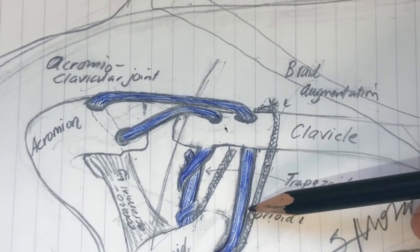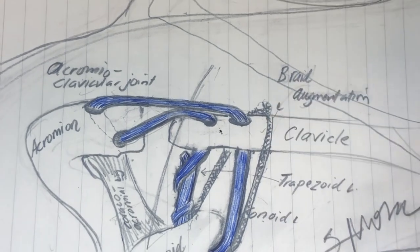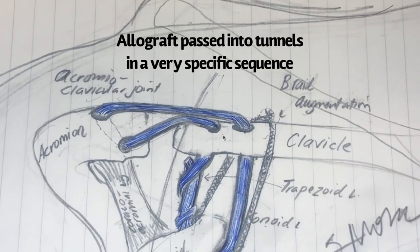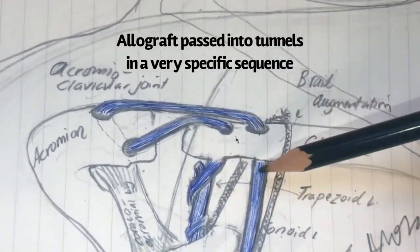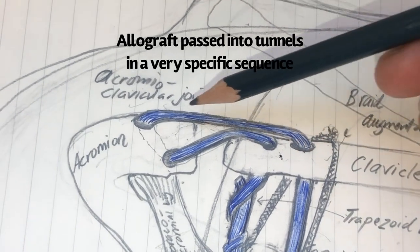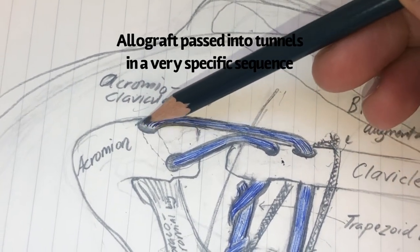Once I pass the tendon in the braid, I tie the braid down. The clavicle is now held down. And then I take this limb of the graft and pass it through the tunnel from under to over. And then I go through the acromial tunnel from over to under.